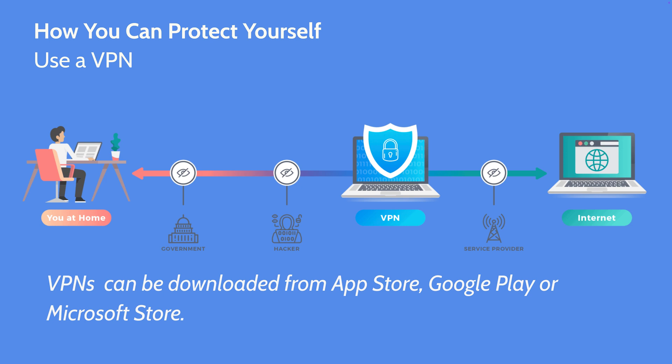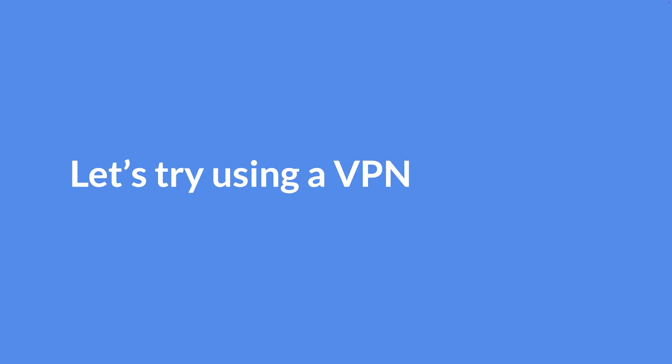Let's quickly look at how to use a VPN. VPNs can be downloaded from the App Store, Google Play Store, or Microsoft Store. I'm going to show you how to use the VPN I tend to use, which is Hotspot Shield. There's a free version of it, and I'm going to show you just how I open it and turn it on.